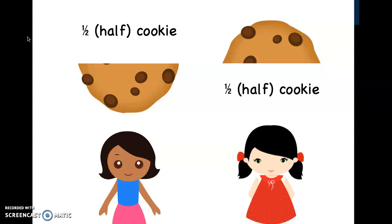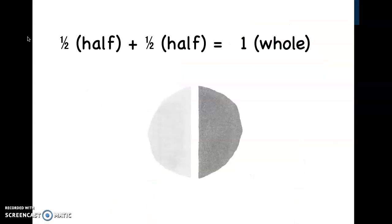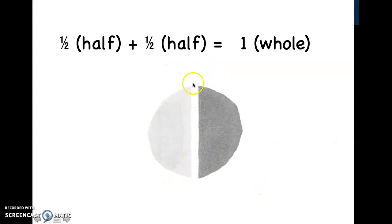Do they have the same amount of cookie? Yes they do. So now we're going to take a look at how this was broken down. We know both girls had half a cookie, so if you guys put that all together, taking a look at the equation, we have one half plus one half equals one whole. In this graphic right here, you guys can see — pretend that this is Katie's half and that this is Betsy's half. When you guys put them together, what do you guys have? Good job — a whole.